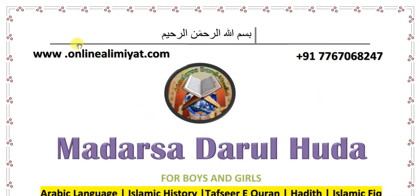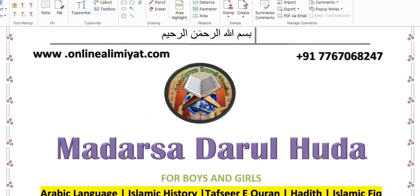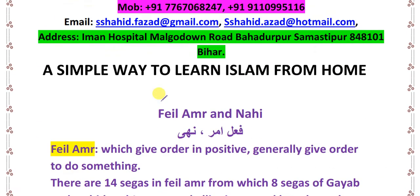Assalamu alaikum warahmatullahi wabarakatuh. In this video we are going to learn about the third and fourth type of fi'l. In the very beginning of ilm as-sarf we learned that there are four types of fi'l: fi'l maazi, which gives the translation of past; fi'l muzaari, which gives a translation of present or future; fi'l amr, which gives an order to do something in positive; and fi'l naahi, which also gives an order but in negative.